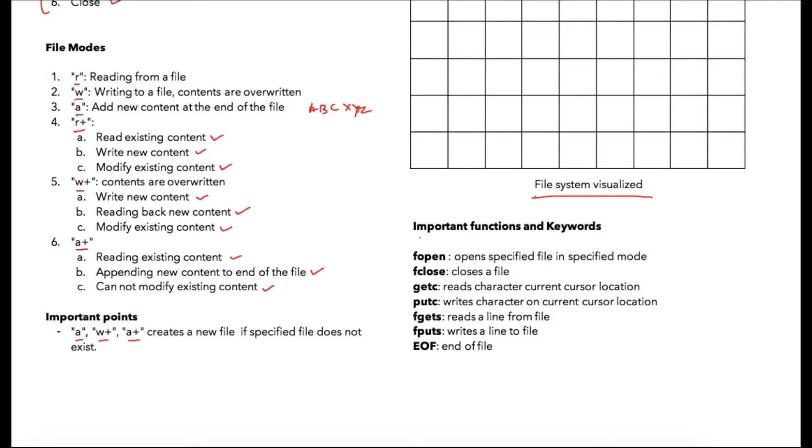In the next lectures we are going to check your programs on file operations so you understand this concept better. And there are few readily available functions which we are going to use. The functions and keywords that we are going to use are fopen - it's a function which opens a specified file in the specified mode. fclose is a function which closes the specified file. getc reads character from the current cursor location. When you open a file cursor will be at the first location initially. When you use this function getc, so data from this location will be given to you and cursor will move on to the next location. Similarly when you again use getc then this data will be given to you and cursor will move on to the next location.